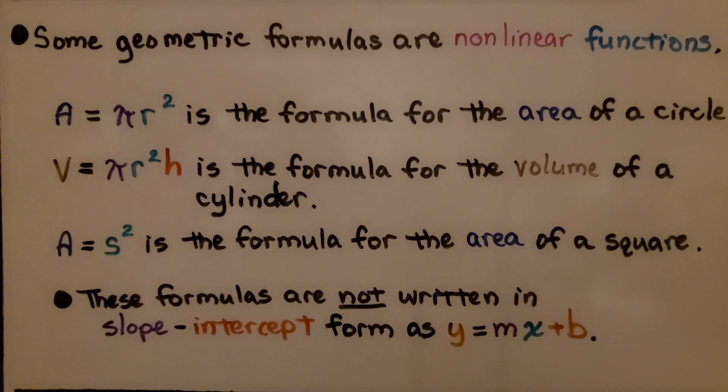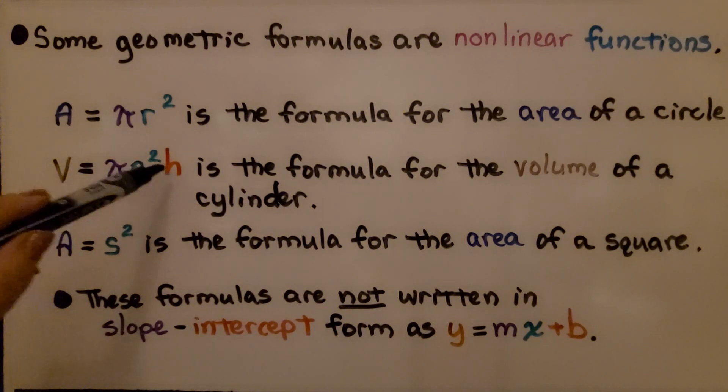Some geometric formulas, those are geometry formulas, are nonlinear functions. If we substitute the information into these formulas, we have v equals pi r squared h, that's the formula for the volume of a cylinder. The volume equals pi times the radius squared times the height. And then a equals s squared is the formula for the area of a square.